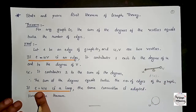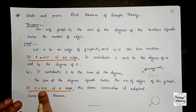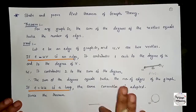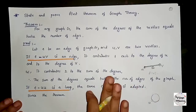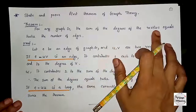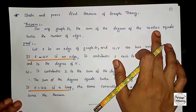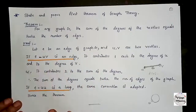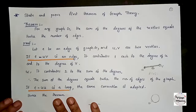Now consider the case where u is the same — that is, e equals (u, u), which is a loop. In this case, by convention, the sum of degrees of vertices will contribute 2, contributing to two times the number of edges — twice the number of edges.